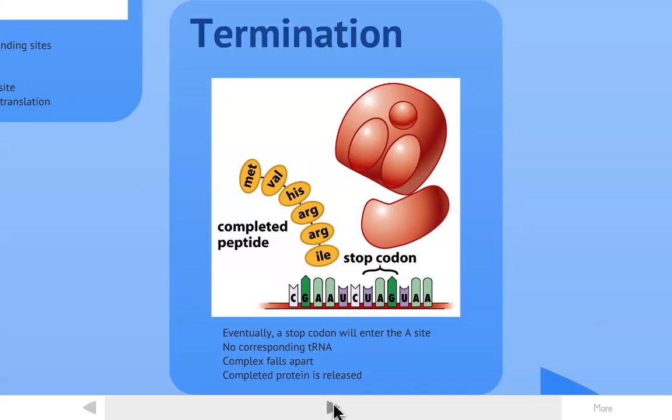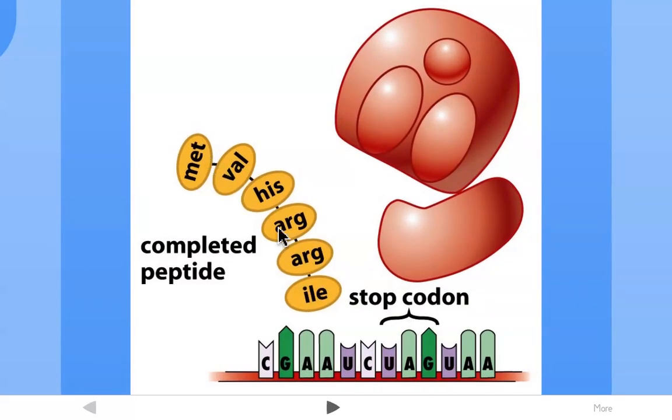So what happens with termination? The stop codon lines up under the A site. There is no corresponding tRNA that has the correct anticodon for this codon, any of the three stop codons, which you will not need to memorize. Just remember the start codon for methionine. That tells the ribosome that it's done. There is actually a protein which comes in and helps this happen, but everything falls apart and the protein is left to go about its job and the ribosomal subunits fall apart. They can then go on and reform on another piece of mRNA. They may even go back to the beginning of this piece of mRNA and translate it again. There are usually multiple ribosomes on each mRNA molecule making protein copies.